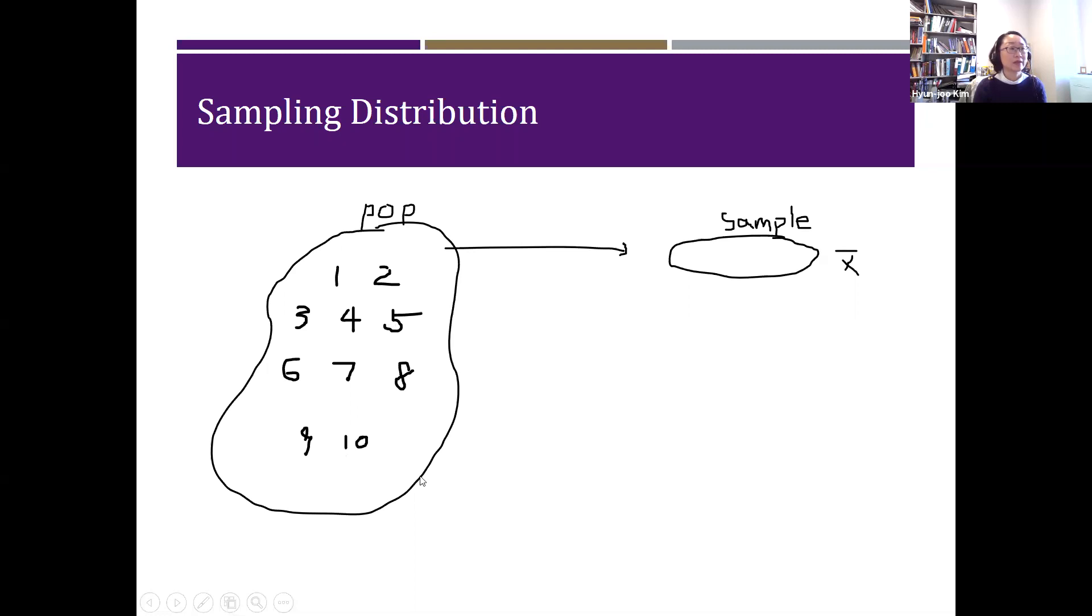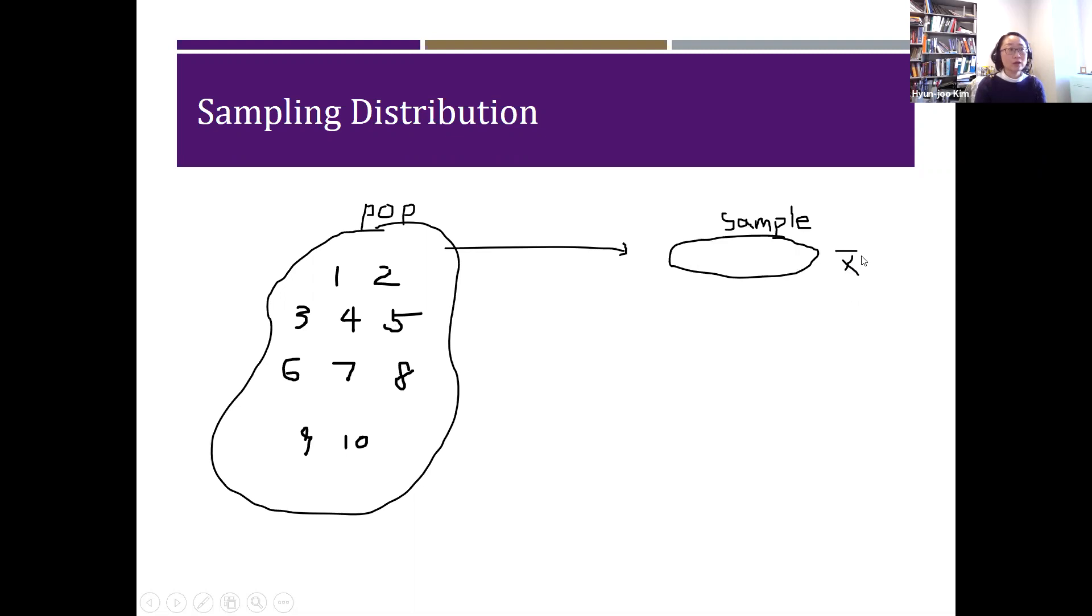So here your population again: 1, 2, 3, 4, 5, 6, 7, 8, 9, 10. And then you're getting a sample of size five. There will be five numbers selected, and then you can calculate X-bar. Well, we repeat that five times. So for each sample, we have five numbers here.